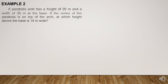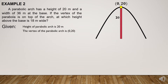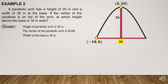Example 2. A parabolic arc has a height of 20 meters and a width of 36 meters at the base. If the vertex of the parabola is on top of the arc, at which height above the base is it 18 meters wide? Given: the height of the parabolic arc is 20 meters. The vertex of the parabolic arc is at (0, 20). The width of the base is 36 meters, so the endpoints of the base are (-18, 0) and (18, 0).